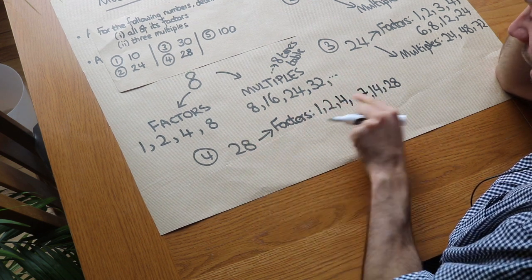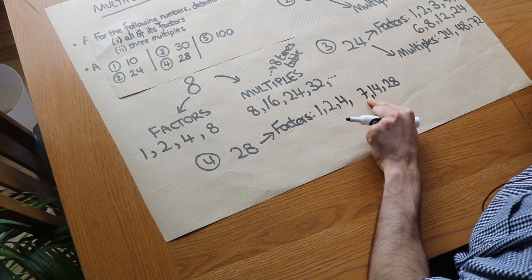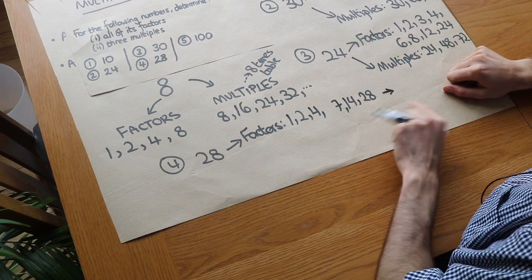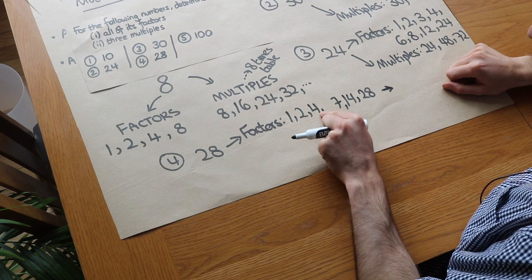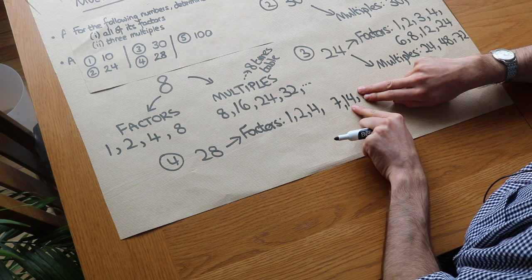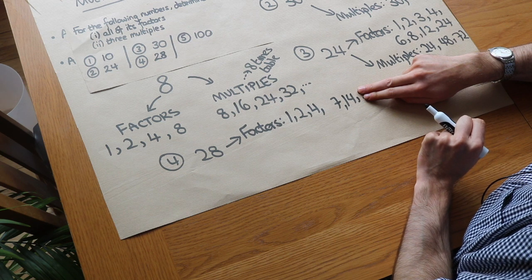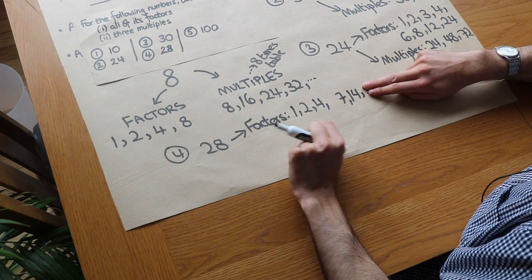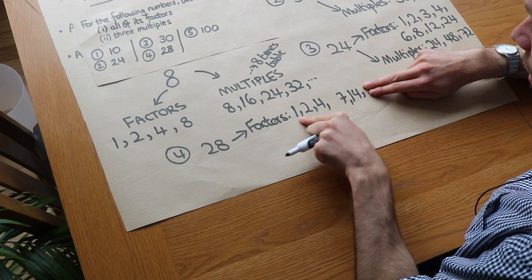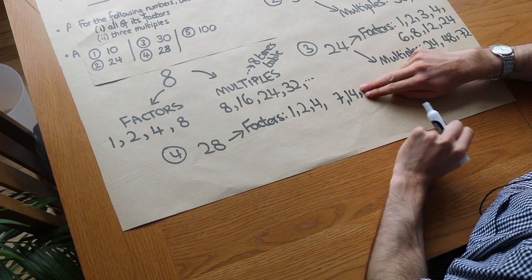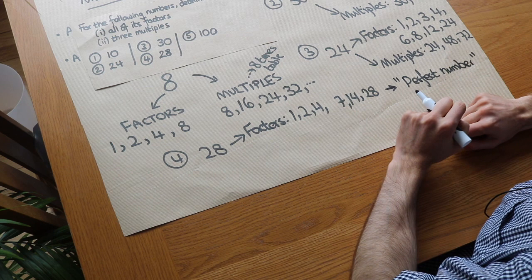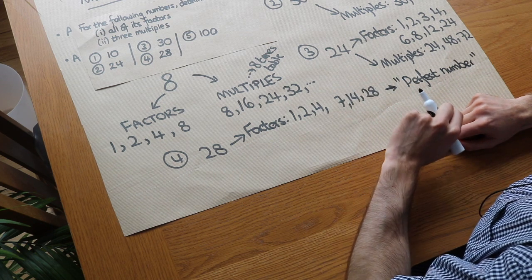5 doesn't go into 28, 6 doesn't go into 28, and now we're up to 7 — so we can see we have our complete list. Here's a nice property of 28: if you add up its factors excluding itself — 1 plus 2 plus 4 plus 7 plus 14 — those numbers add up to 28. When that happens, we say the number is a perfect number. The first perfect number is 6, because its factors excluding itself are 1, 2, and 3, and 1 plus 2 plus 3 equals 6.